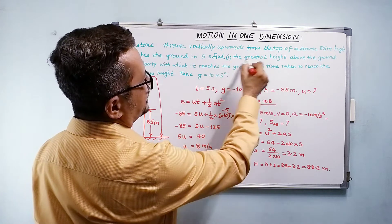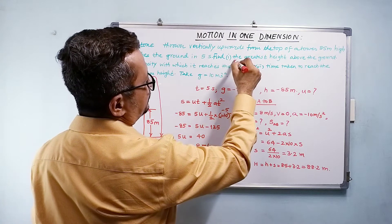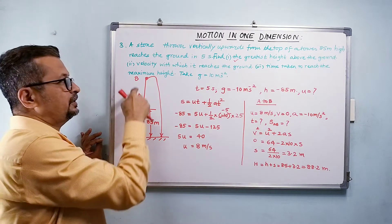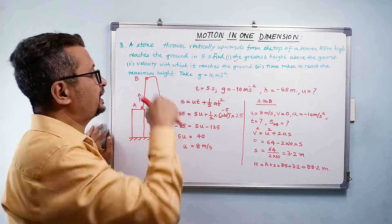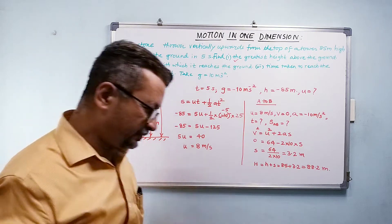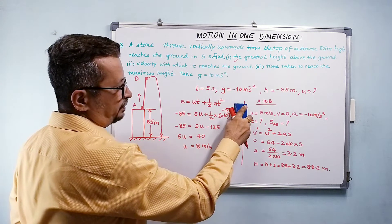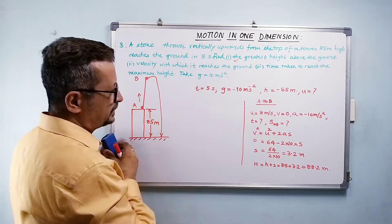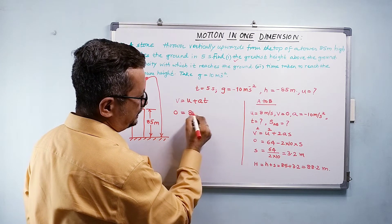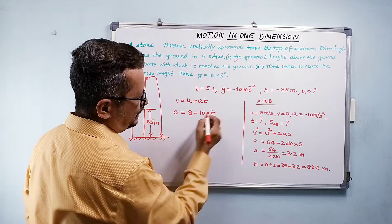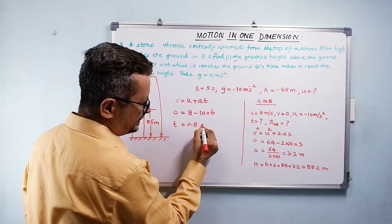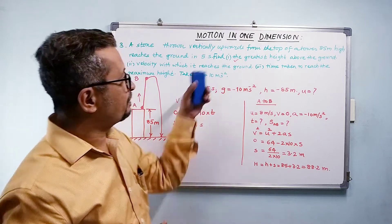Now for the time taken to reach maximum height — from A to B. I know velocity at B is zero, velocity at A is 8 m/s, and acceleration is minus 10. Using the first kinematic equation: v equals u plus at. So 0 equals 8 minus 10t, giving t equals 8 divided by 10, which is 0.8 seconds. It takes 0.8 seconds to reach maximum height.